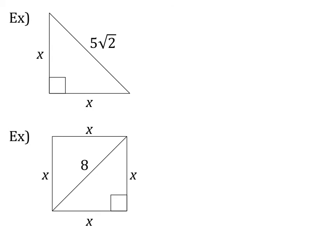Now pause the video and try this first example on your own. So hopefully you noticed that we have two congruent side lengths, so I'm going to mark them congruent. And if we have two congruent sides and a right angle, that makes this a 45-45-90.